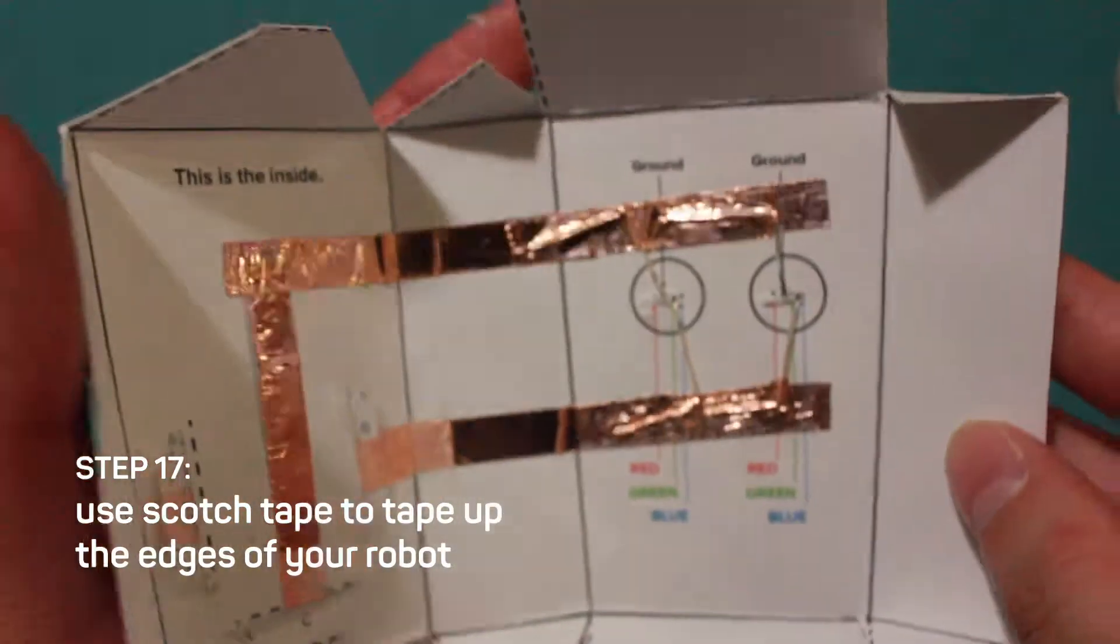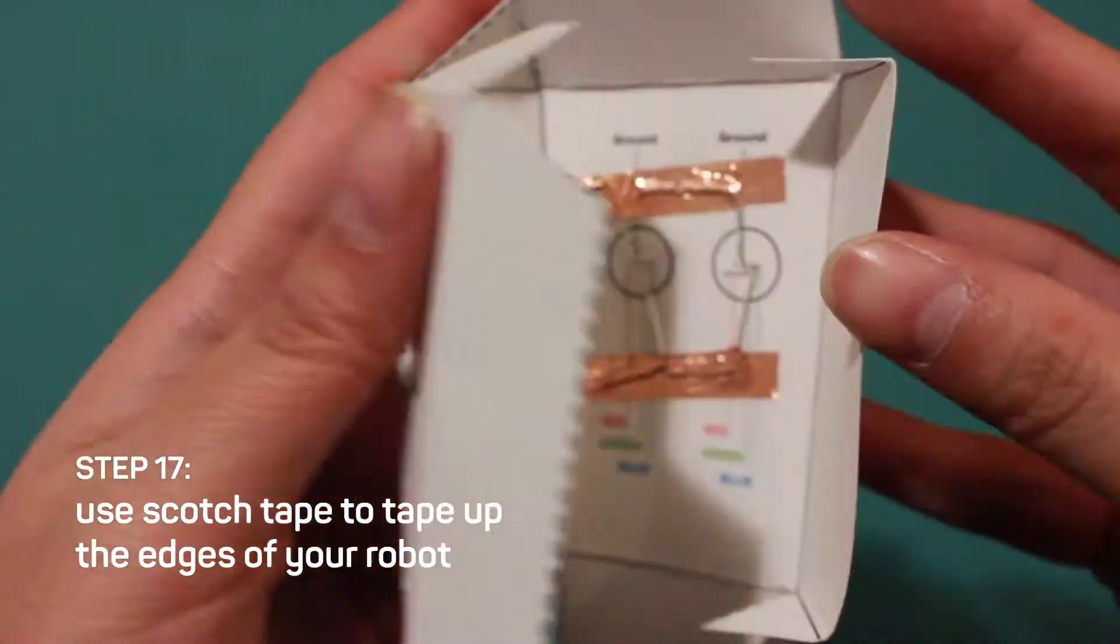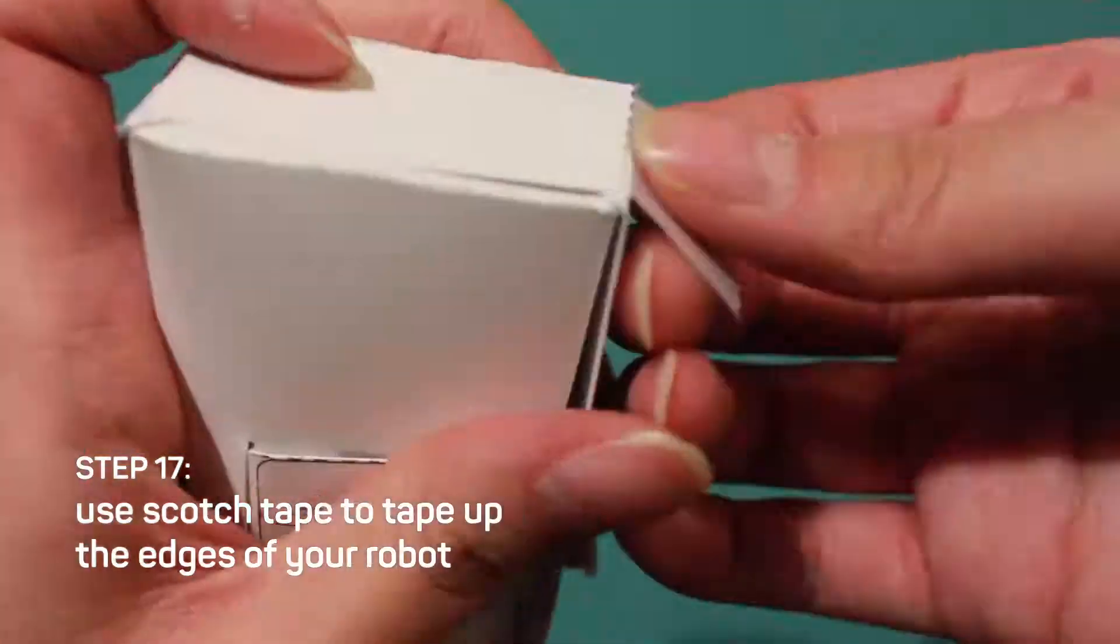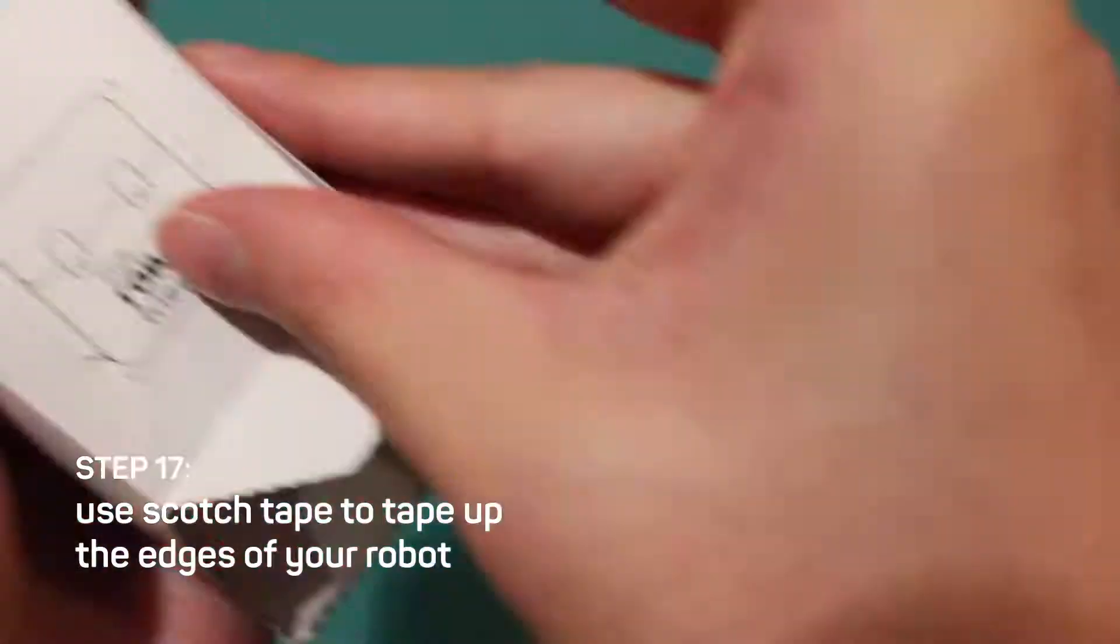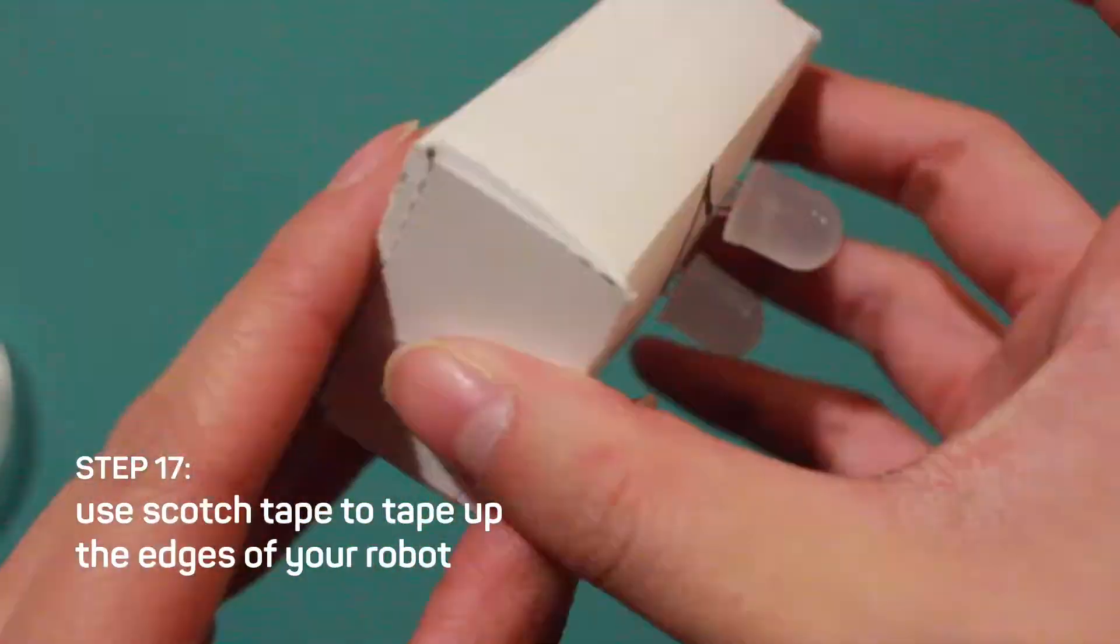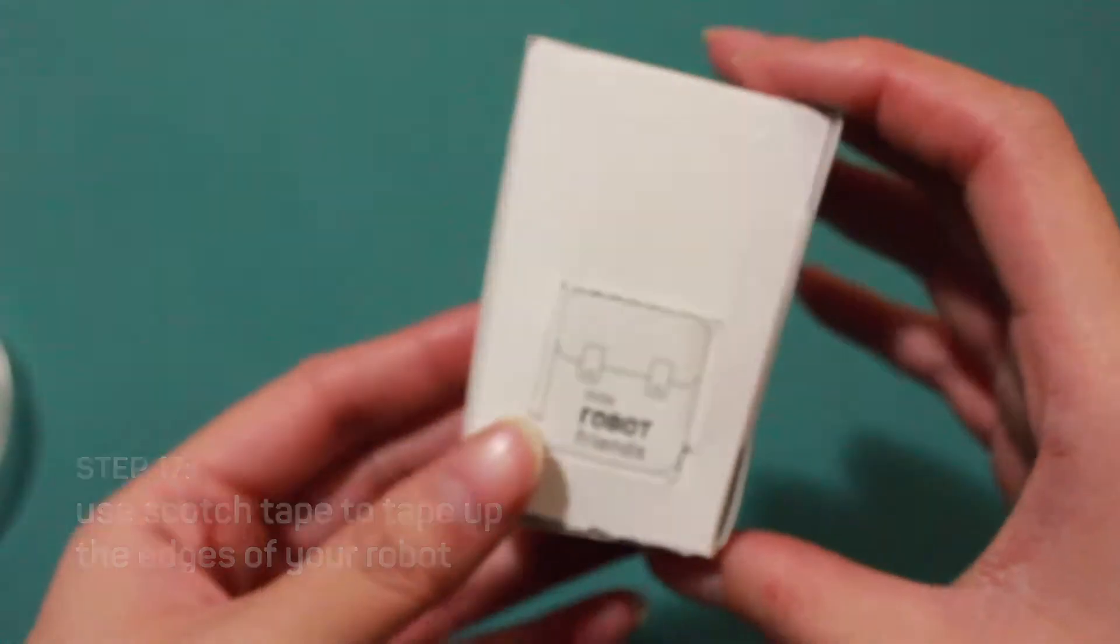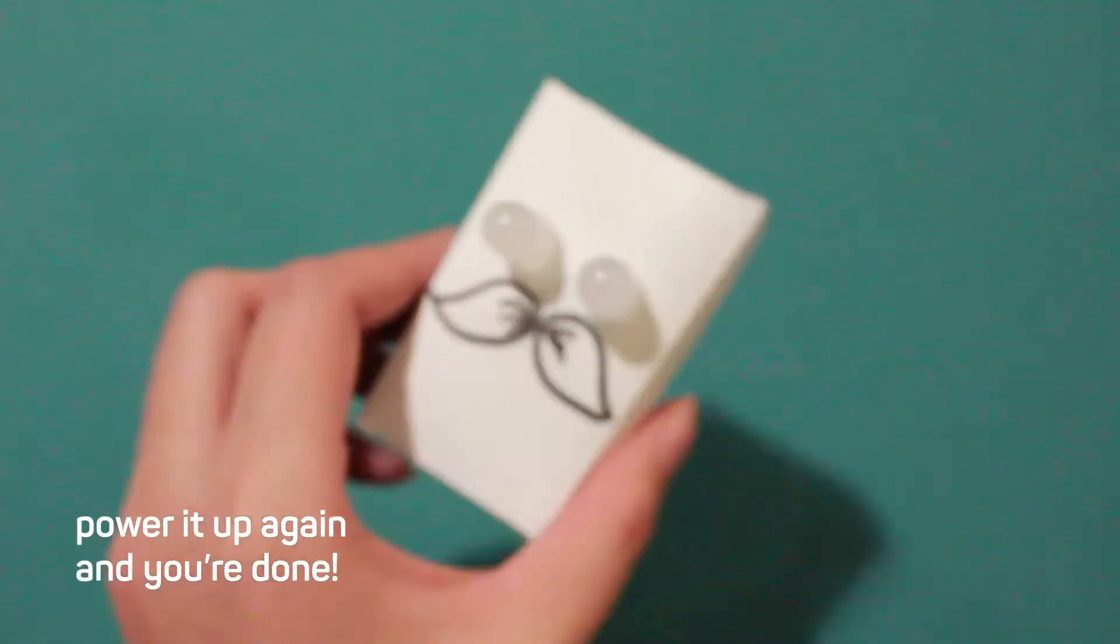Step 17, use scotch tape to tape up the edges of your robot. You're almost done. Power it up again and you're done! Yay!